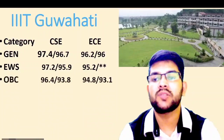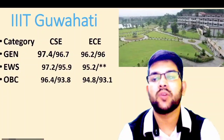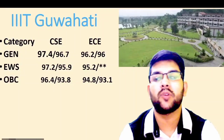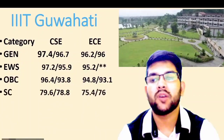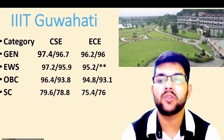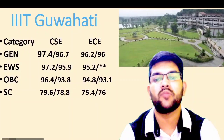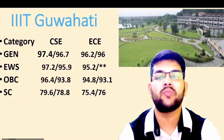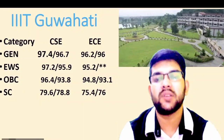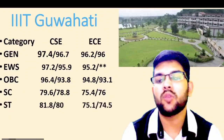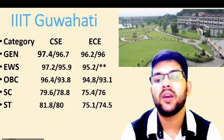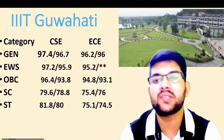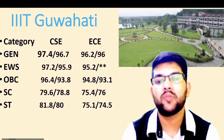For OBC: 96.4 and 93.8 — that is for CSC — and for EC: 94.8 and 93.1. For SC: 79.6, 78.8, 75.4 and 76 percentile — that is for CSC and EC. For female candidates, you can check after the slash.